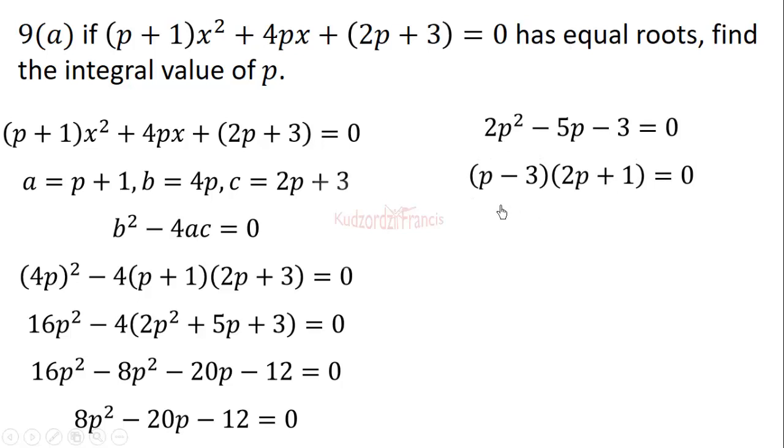Now we use the zero product principle, which says if two factors multiply to get zero, either this is zero or this is zero. That gives us p - 3 = 0 or 2p + 1 = 0.